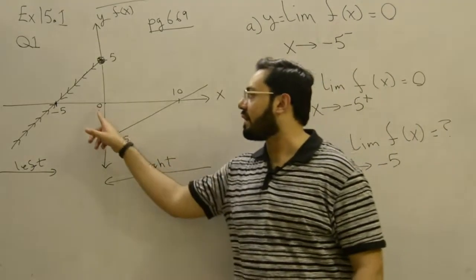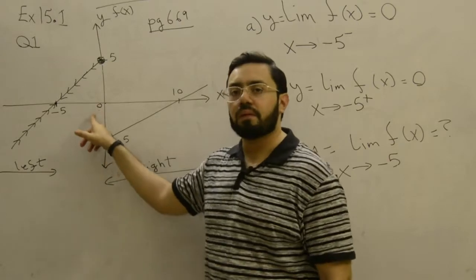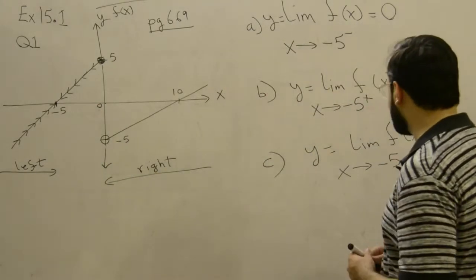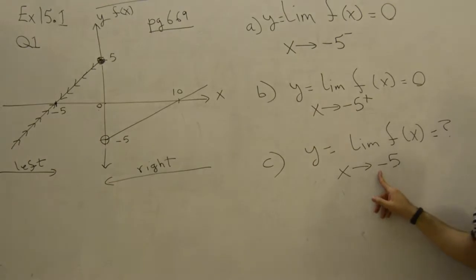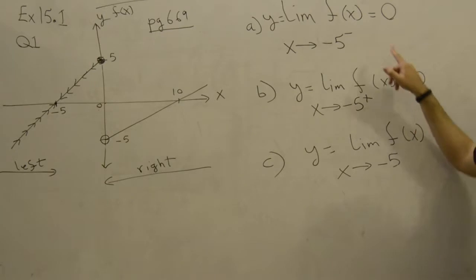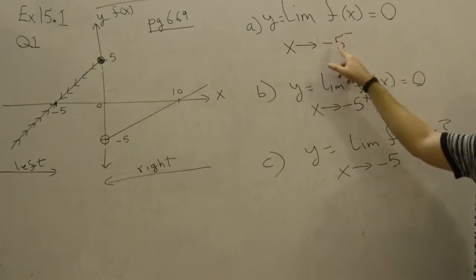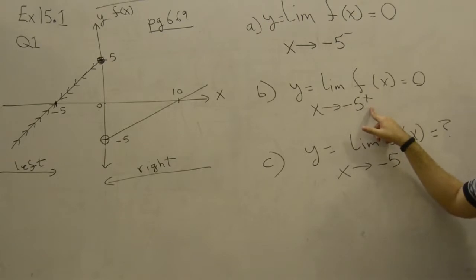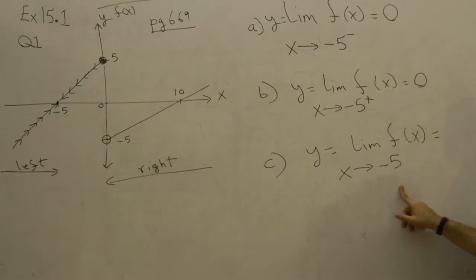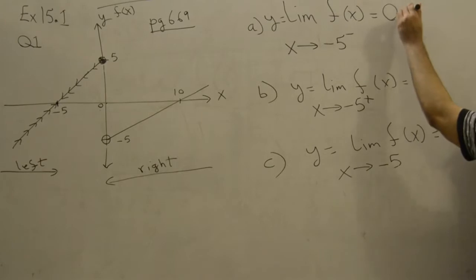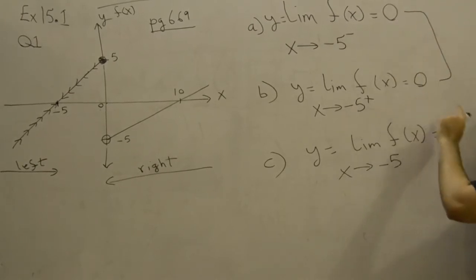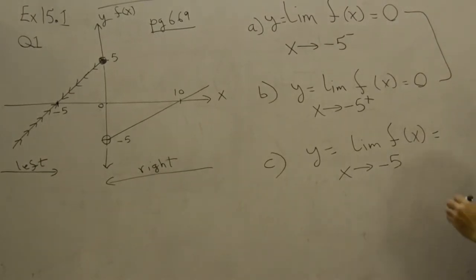So now as you can see in part c, they're asking us to approach minus 5 from both directions—left and right. We've already done this in part a—approach minus 5 from the left side—and approach minus 5 from the right side. Now this question is clearly asking us to find the overall limit when I'm approaching negative 5 from both directions. Simple: compare these two limit values. Are they the same? If they are the same, that means the answer is the same—it has reached a limit value.